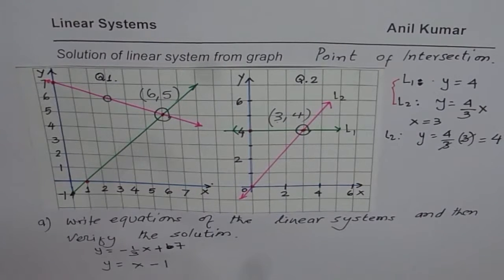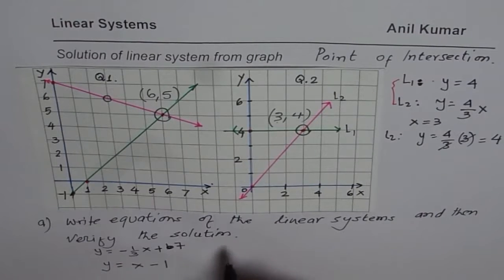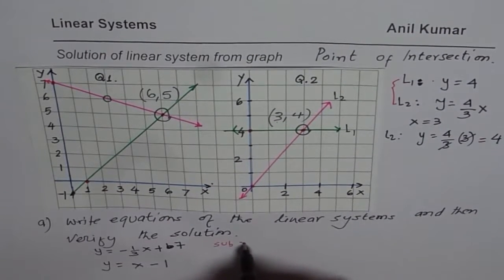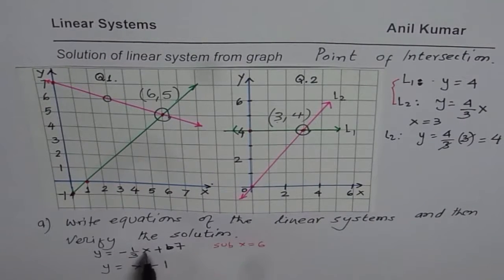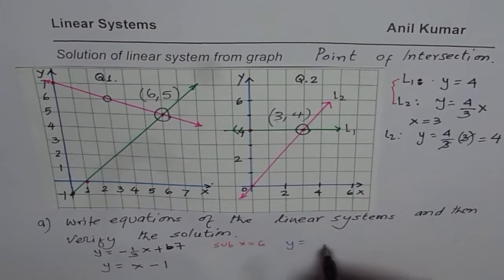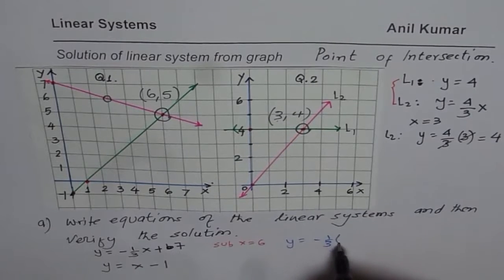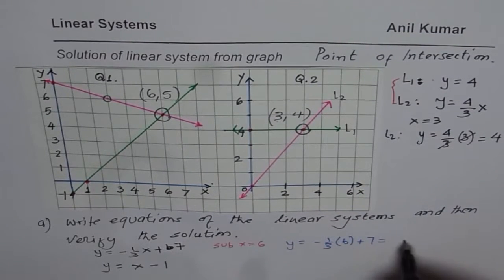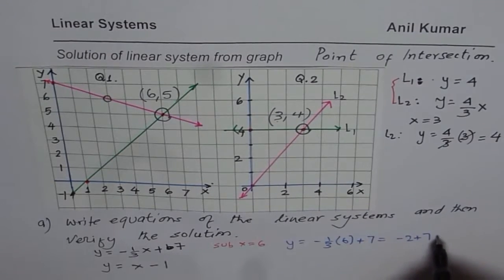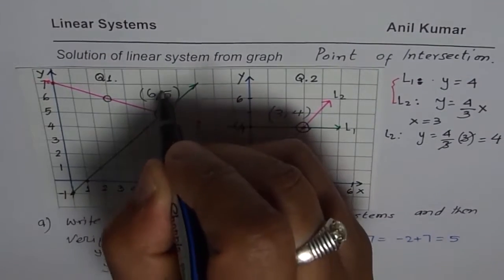Now let us verify. To verify, we will substitute x equals 6. If I substitute x equals 6 in the first equation, I get y equals minus 1 over 3 times 6 plus 7, which is minus 2 plus 7, which is 5. So that is the value 5.